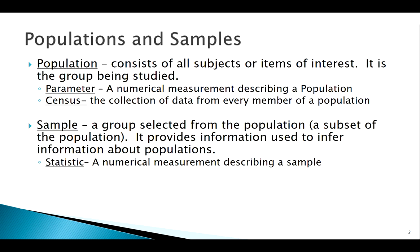These definitions should look familiar to you. Our population is a large group that can answer a question for us. Populations are usually pretty big, so we're not typically able to perform a census or calculate parameters. Parameters are usually what we're interested in to answer a question about the population.